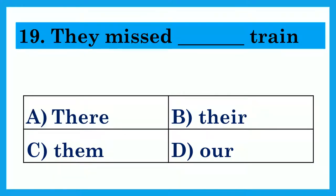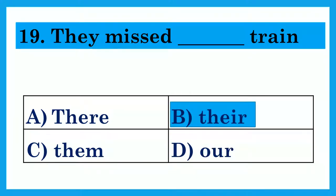They missed dash train. Option A: There. Option B: Their. Option C: Them. Option D: Are. The answer is Option B: Their — They missed their train.